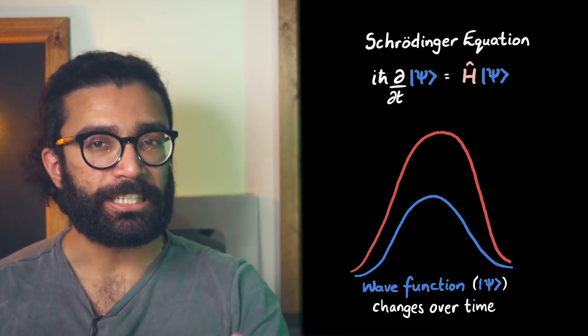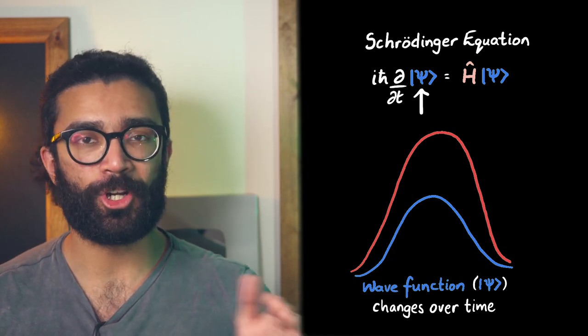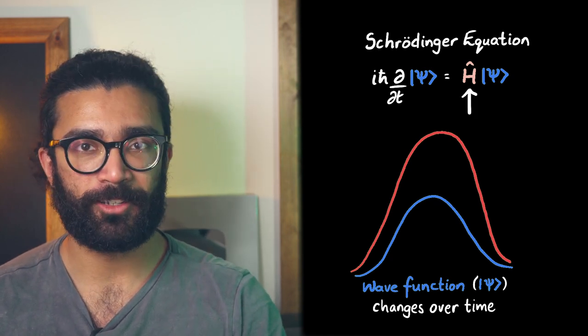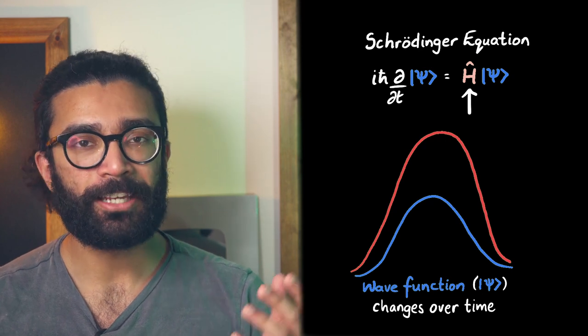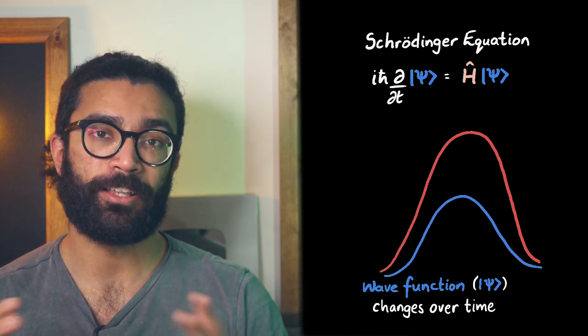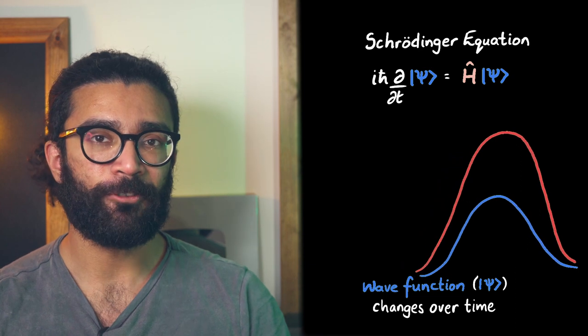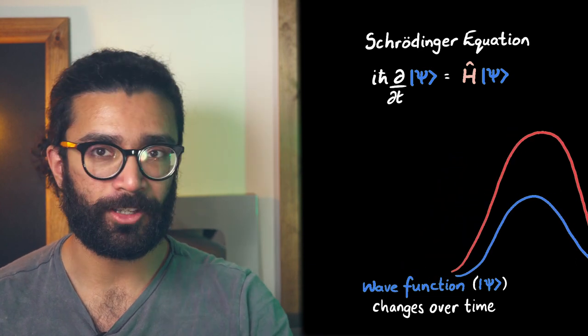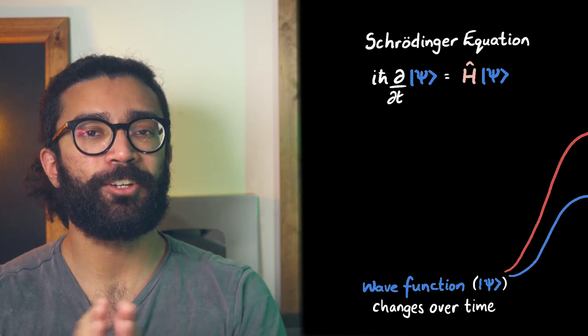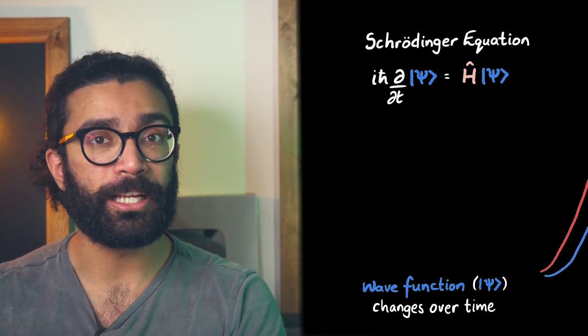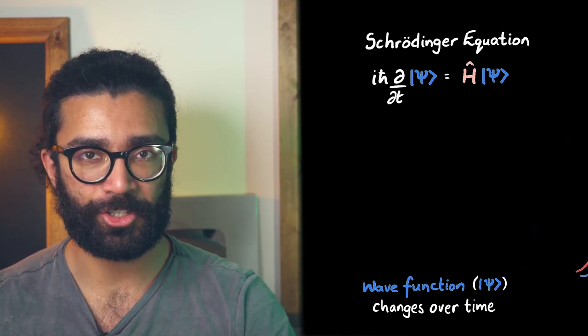It basically just tells us how the wave function should change over time depending on the system and its surroundings. And if the wave function changes over time, then the probability of finding our particle also changes over time.